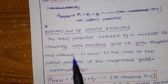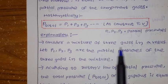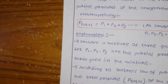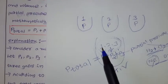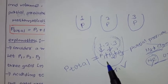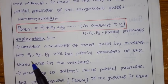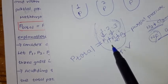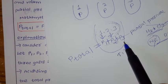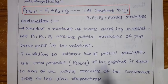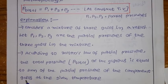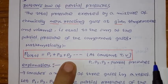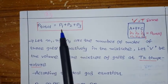This is Dalton's Law of Partial Pressure. Consider a mixture of three gases in a vessel. Assume their partial pressures are P1, P2, and P3 in the mixture. According to Dalton's Law of Partial Pressure, the total pressure P_total equals the sum of the partial pressures of the component gases: P_total = P1 + P2 + P3.